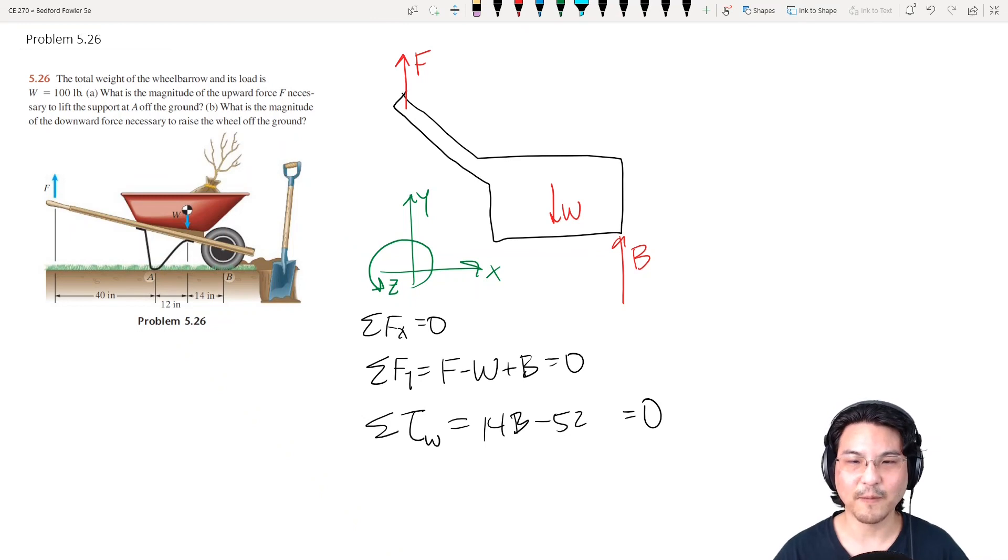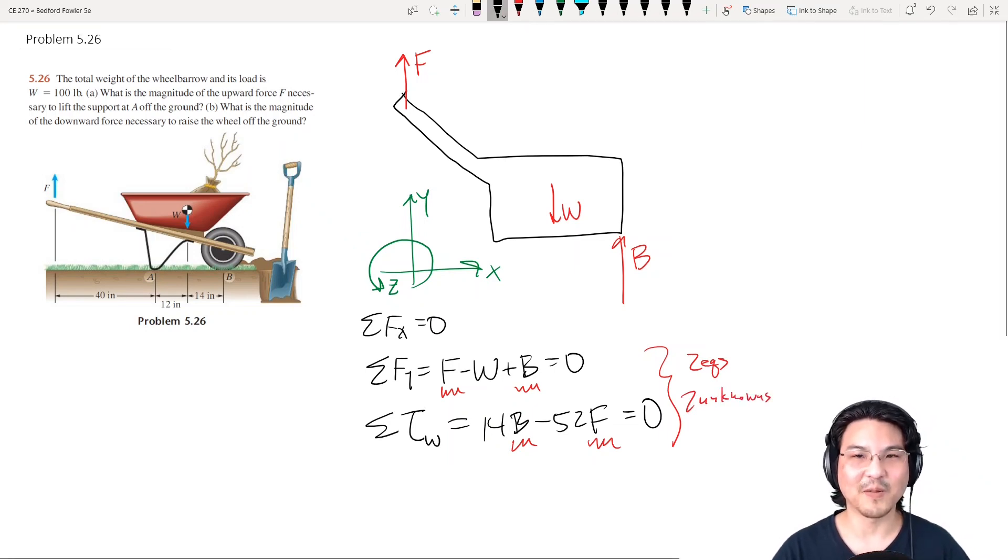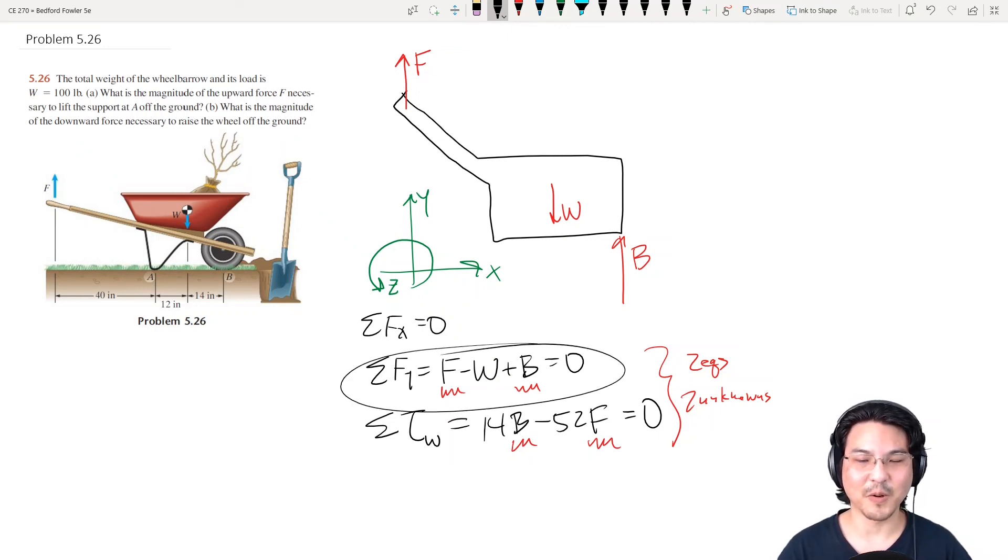This is F. Okay, we're trying to solve for F, but here's the thing. I got two equations, two unknowns, but maybe slightly more complicated to solve than the previous examples. Because now, let's say I solve this for B.